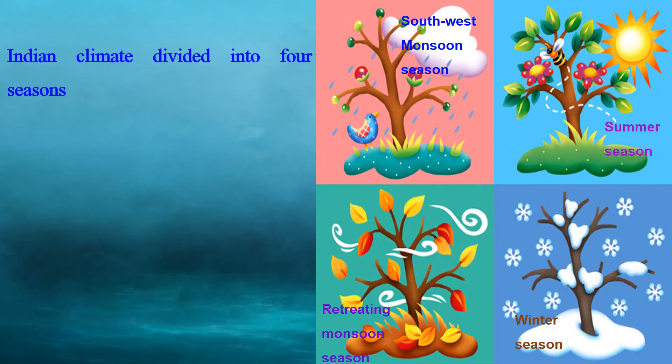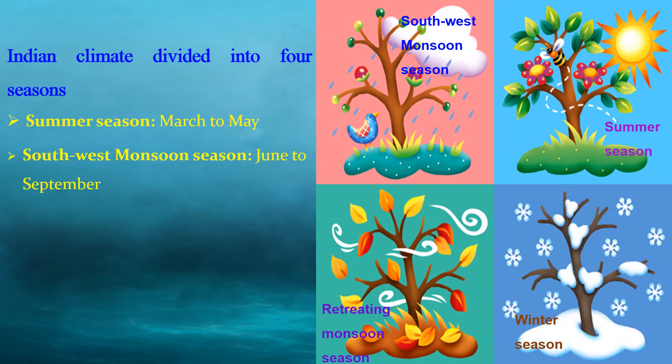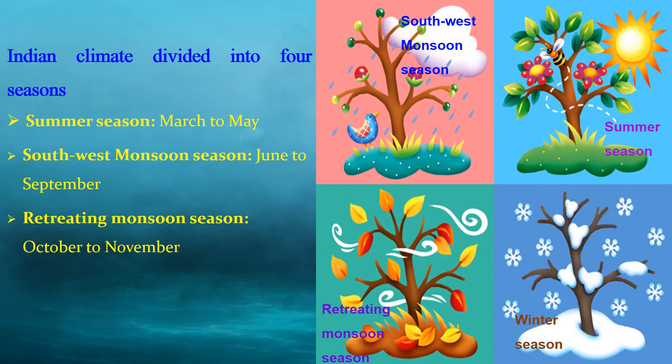Indian climate is divided into four seasons: Summer Season, March to May; South-West Monsoon Season, June to September; Retreating Monsoon Season, October to November; and Winter Season, December to February.